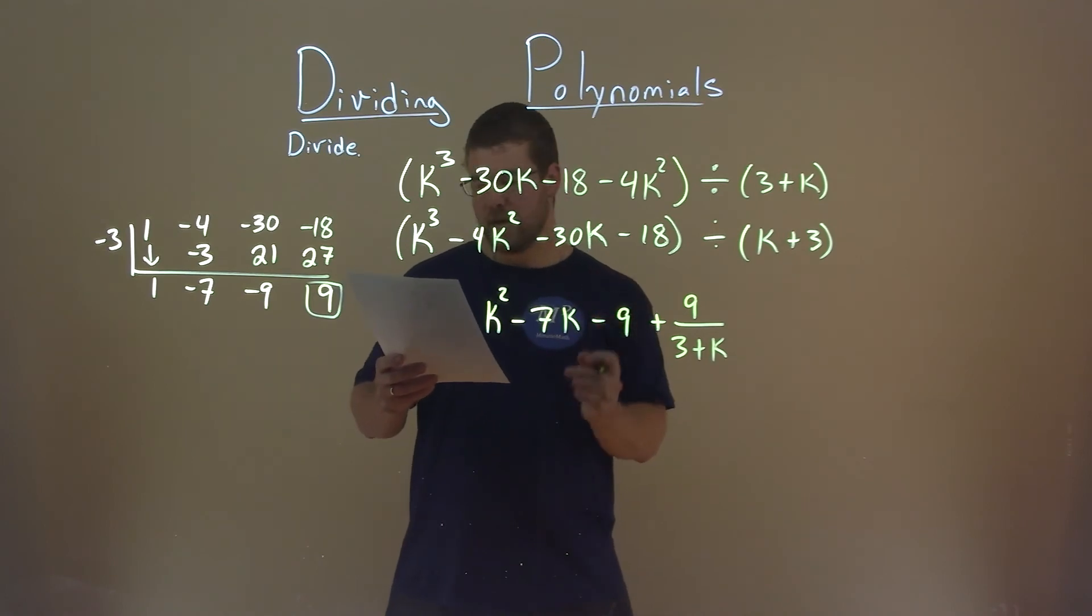k squared minus 7k minus 9 plus 9 over 3 plus k.